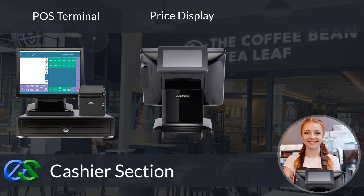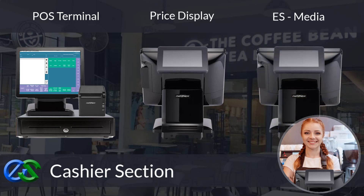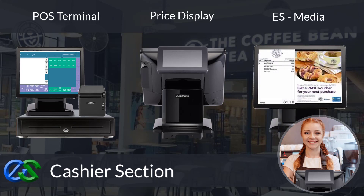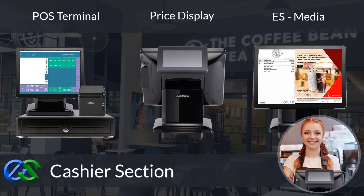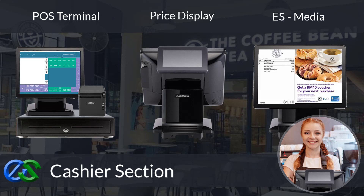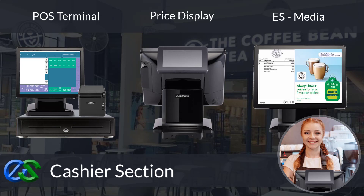You may add a rear mounted customer display that allows you to display itemized order prices to your customers. Beside that, you may add a second screen display that comes with an ES media module, allowing customers to view the entire bill with total amount. You also can display your ongoing promotions and announcements at the advertisement display area.